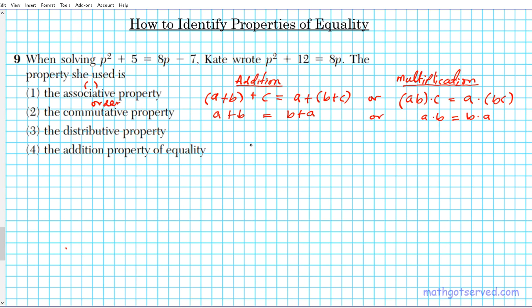The distributive property—this one is a combination of addition and multiplication. If you have a times b plus c, what you do is you distribute, right? A to b, a to c, and that gives you ab plus ac.